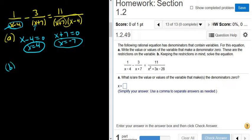Part B wants us to actually solve the equation. So I'll go ahead and write it again, 1 over x minus 4 minus 3 over x plus 7 equals 11 over x plus 7 x minus 4. And if we get an answer of either 4 or negative 7, we know that's no good.